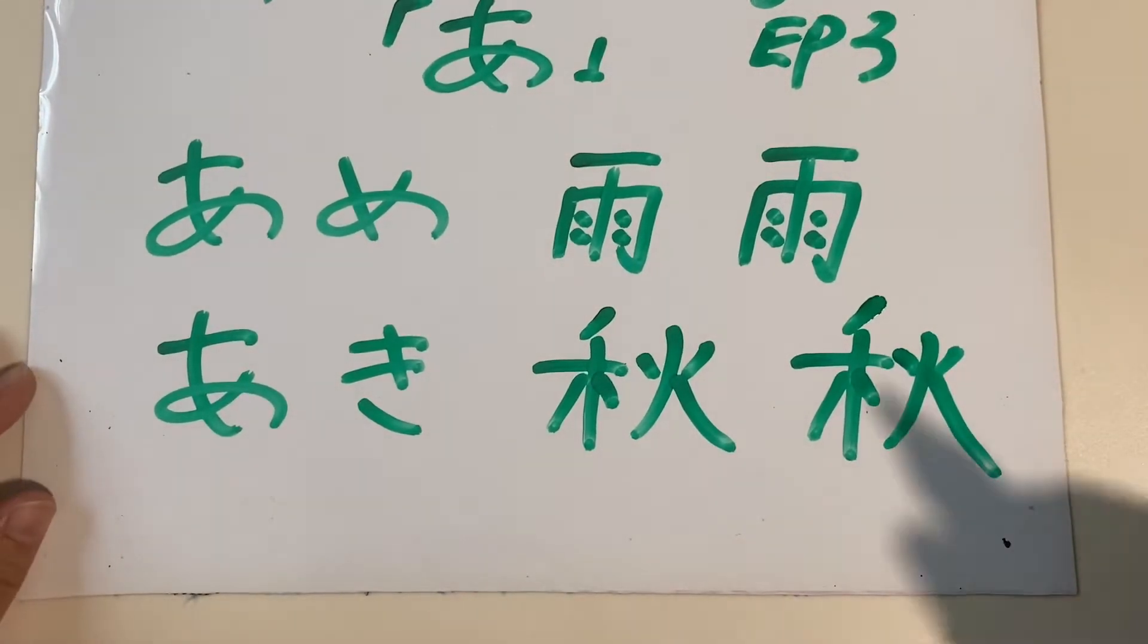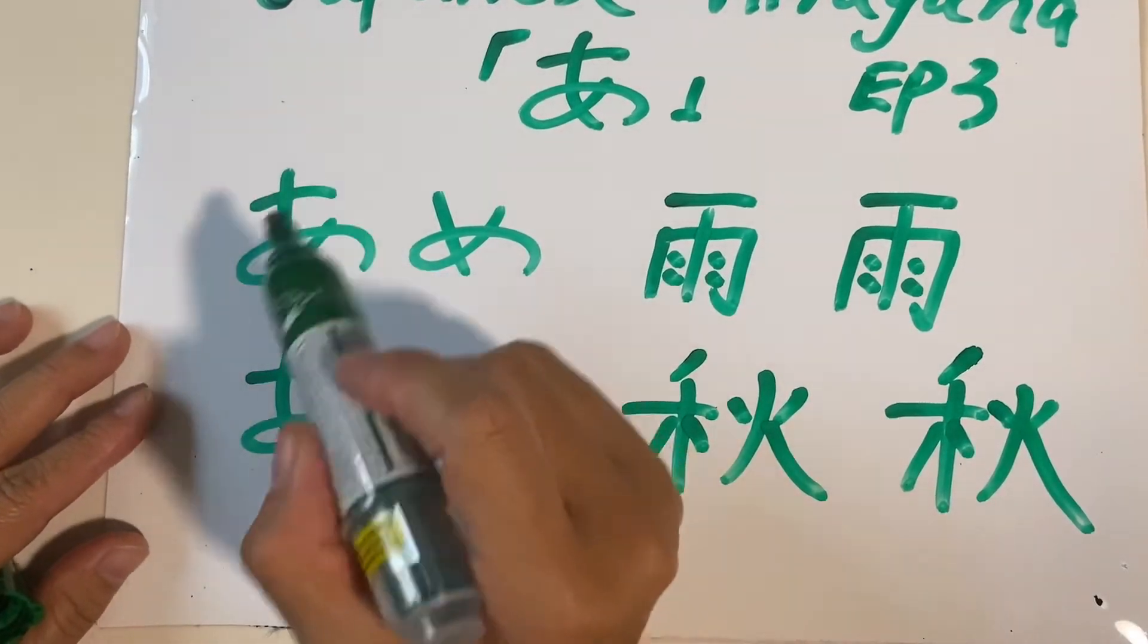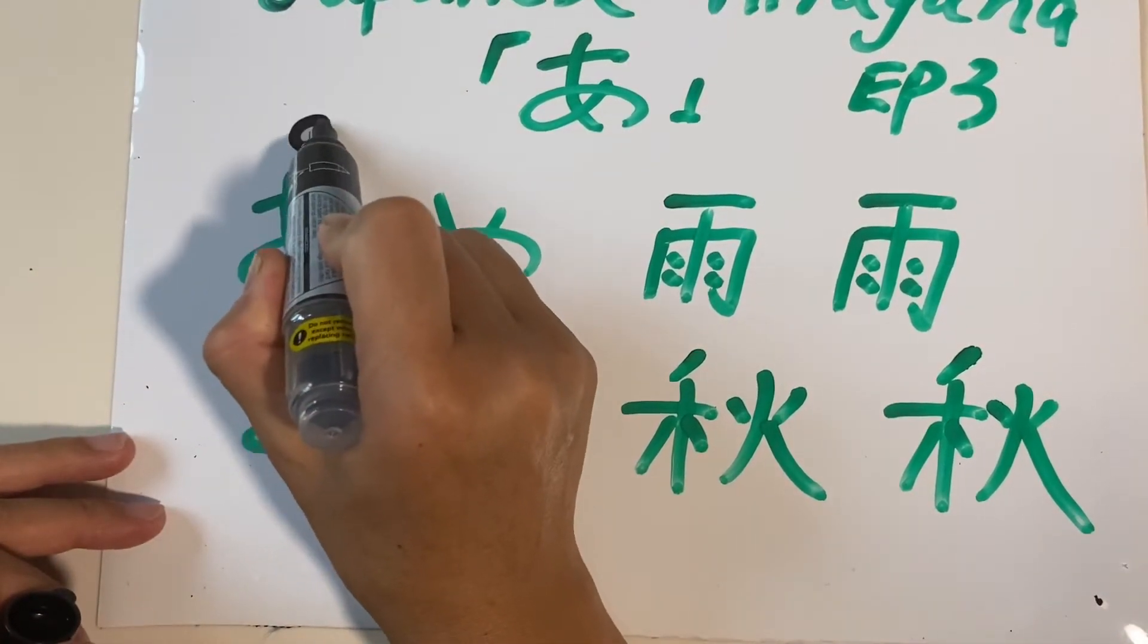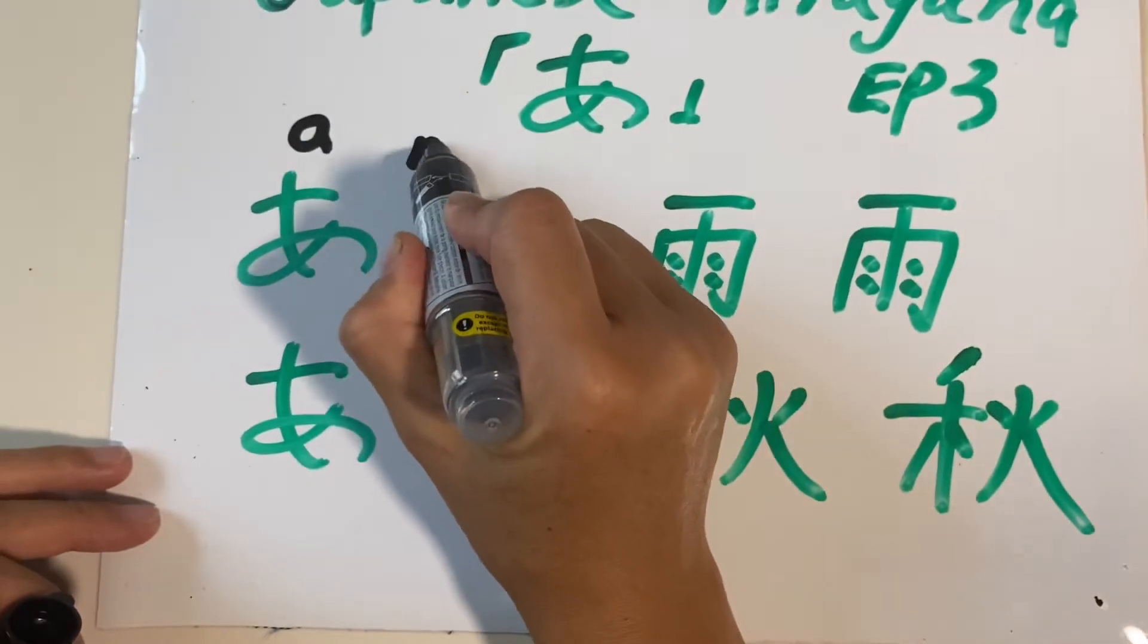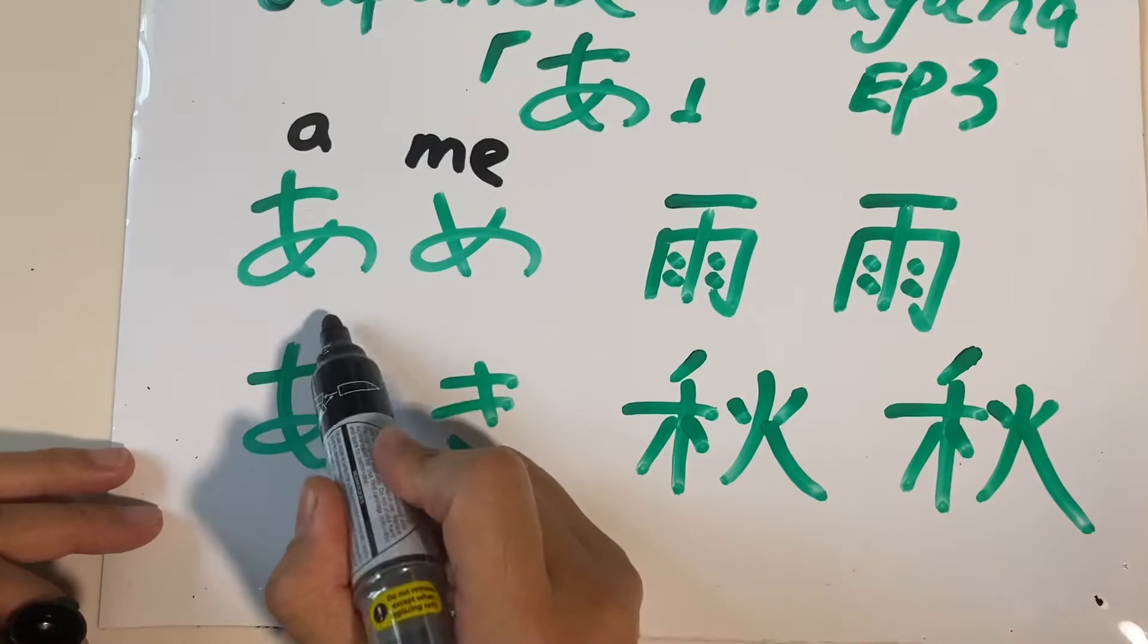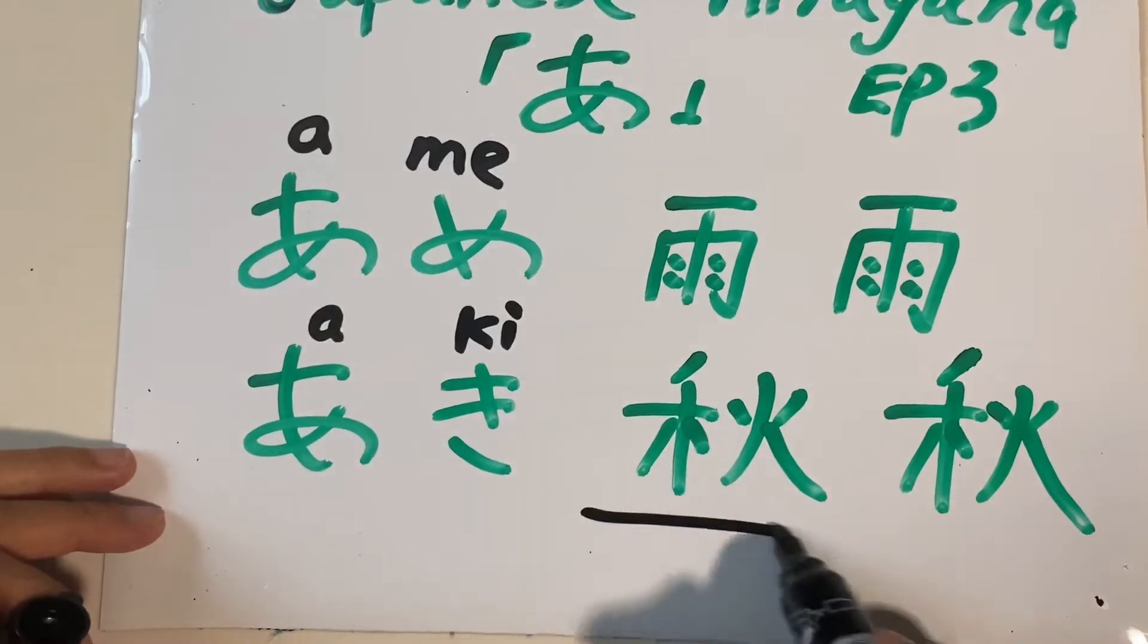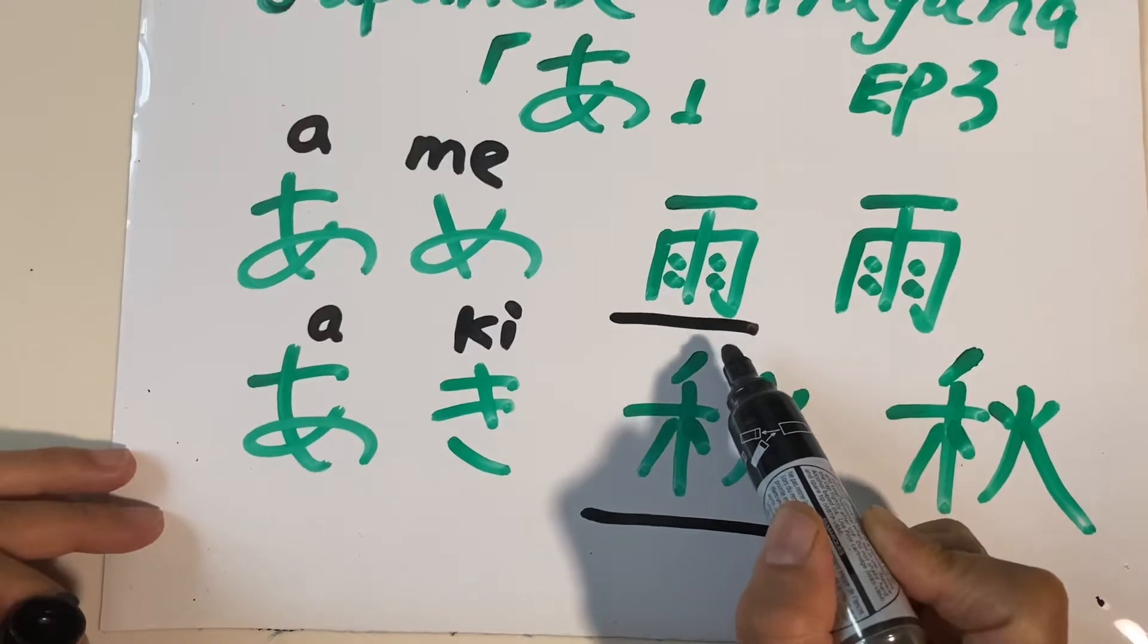Okay, aki. So Hiragana. Is it better for me to put down the romaji for you? Just in case you are very beginners. Ame, A-M-E. Ame. Alright. Aki, A-K-I. Aki. This is the kanji for aki, this is the kanji for ame.